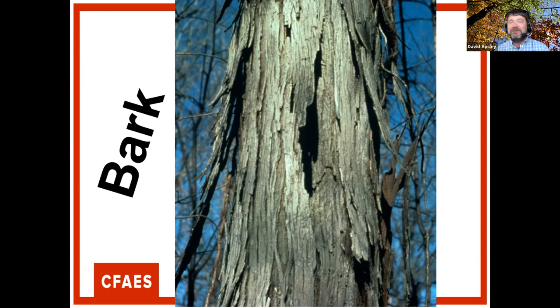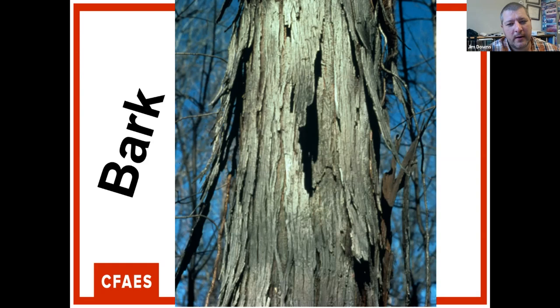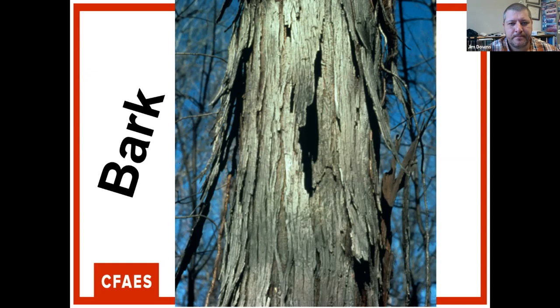The first bark example is shagbark hickory — the shaggy, peeling plates are distinctive. Jim notes that a similar-looking species is shellbark (kingnut) hickory, which grows on floodplains, produces larger hickory nuts, and grows to larger diameters. You need buds and leaflet numbers to really separate the two, but many people don't realize shagbark and shellbark are two different species.